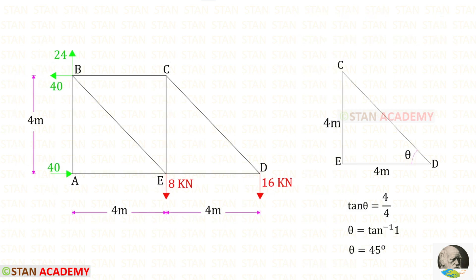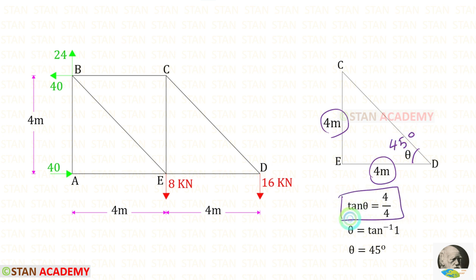We have to find this angle. Let us keep the angle as theta. On the opposite side and the adjacent side, we have the same dimension, that is 4 meters. So the angle should be 45 degrees. Alternatively, we can use the tan theta formula, and using that also, we will get 45 degrees.